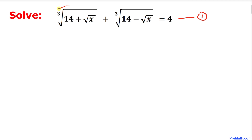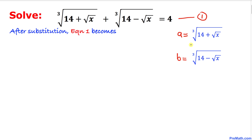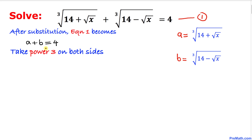The first thing I'm going to do is call the first term 'a', so a equals the cube root of (14 plus square root of x). Let's call the second term 'b', so b equals the cube root of (14 minus square root of x). After this substitution, equation one becomes: a plus b equals 4.